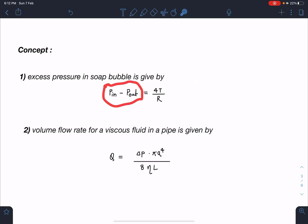Here this pressure inside is going to be more than the pressure outside. The next part is the volume flow rate for a viscous fluid in a pipe is given by Poiseuille's equation. Q is the volume flow rate.